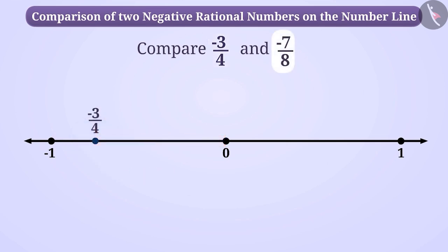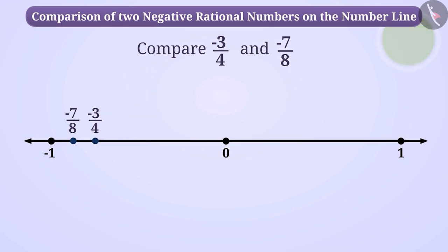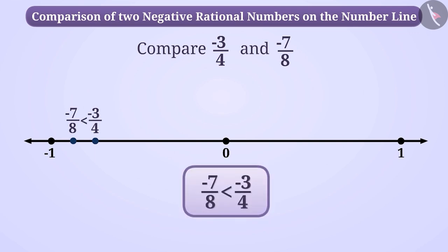Similarly, the position of -7/8 can be represented by dividing the distance between 0 and -1 into 8 equal parts and taking 7 parts out of it. After observing their positions, try to identify which number is greater and which is smaller. After looking at their positions, it can be observed that -3/4 is to the right of -7/8. Therefore, -3/4 is a greater rational number than -7/8.